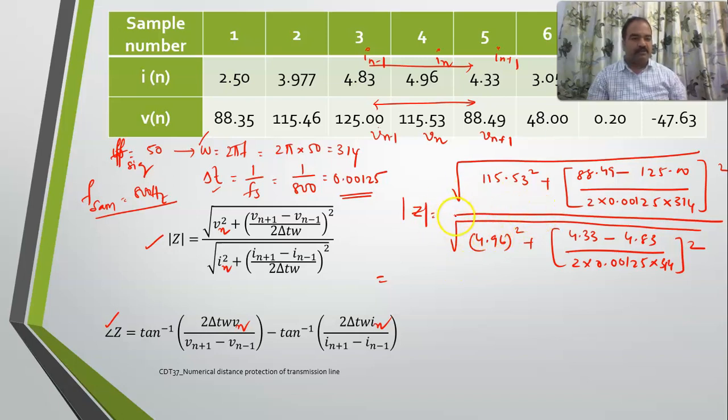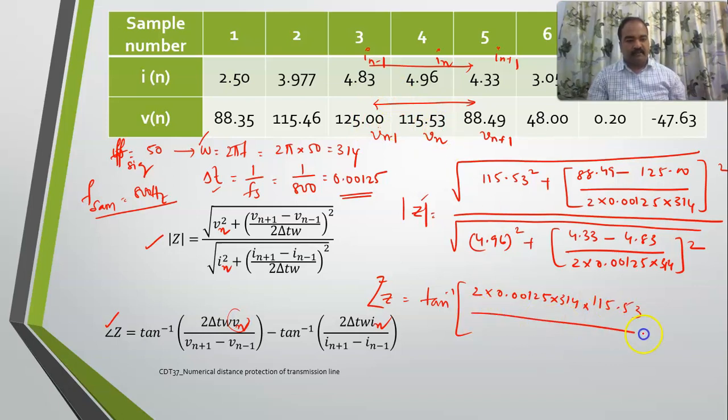Similarly, if I want to calculate the angle of z, see how I am supposed to take tan inverse of 2 into 0.00125 into 314 into the Vn value 115.53 by Vn plus 1 minus Vn minus 1, so I will get 88.49 minus 125, minus tan inverse of 2 into 0.00125 into 314 into In 4.96 by 4.33 minus 4.83. This is the angle z.